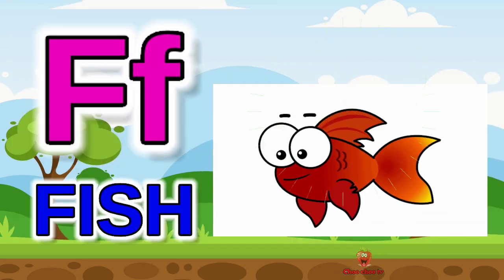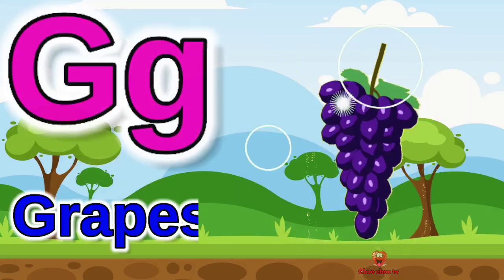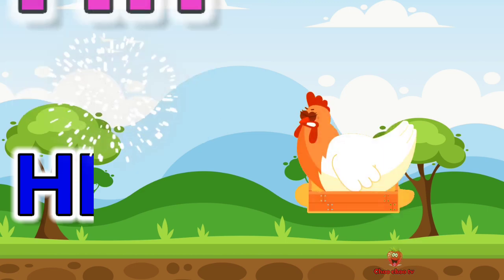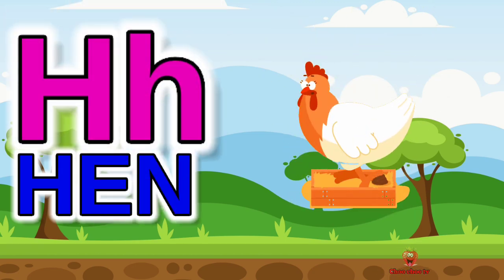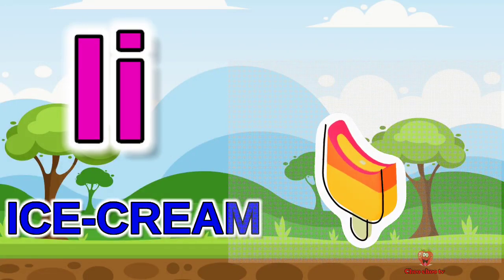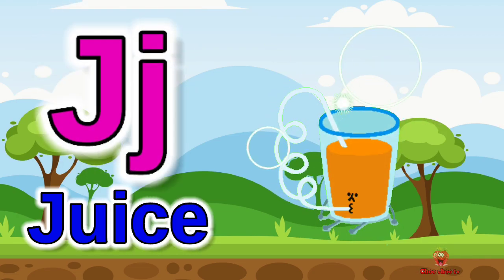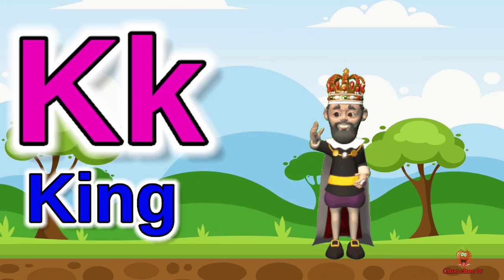F for fish, G for grapes, H for hen, I for ice cream, J for juice.